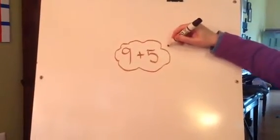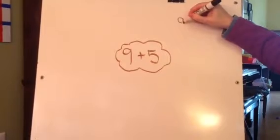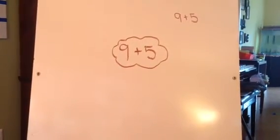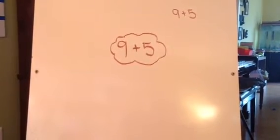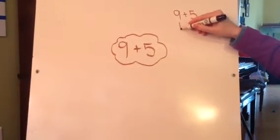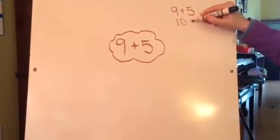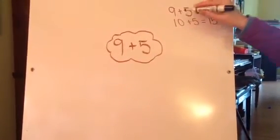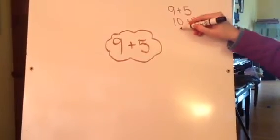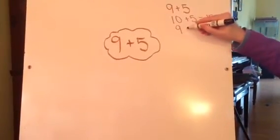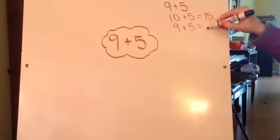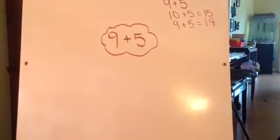Okay, one way I could solve 9 plus 5 is I could think of a fact that I know that's really close. I know this fact, 10 plus 5 equals 15. That's only one more than 9 plus 5. So if 10 plus 5 equals 15, 9 plus 5 equals 1 less, it equals 14.